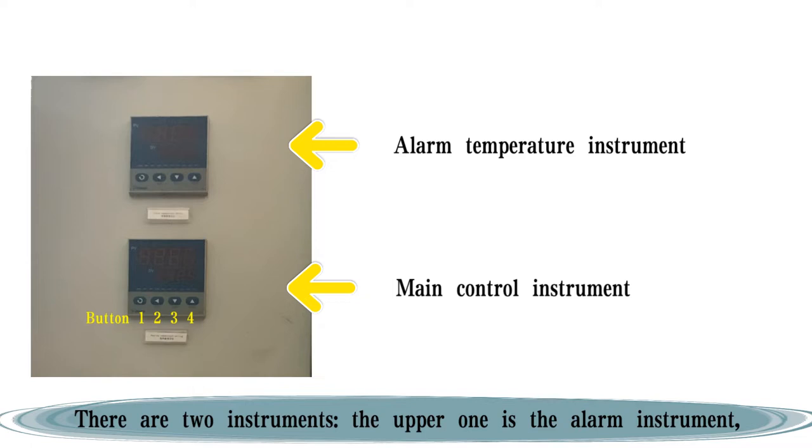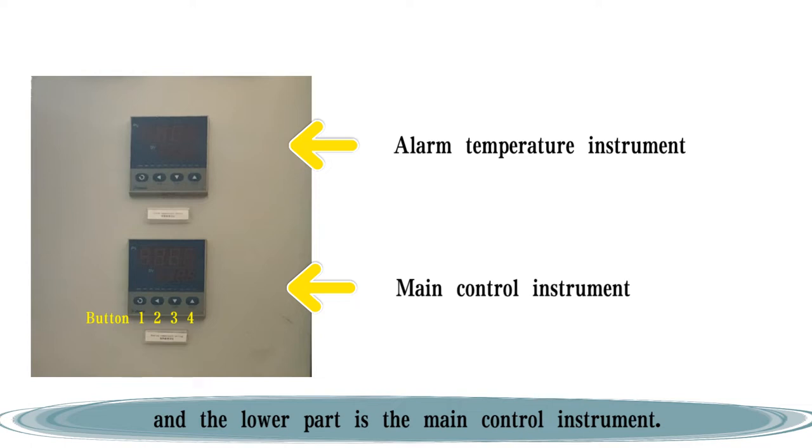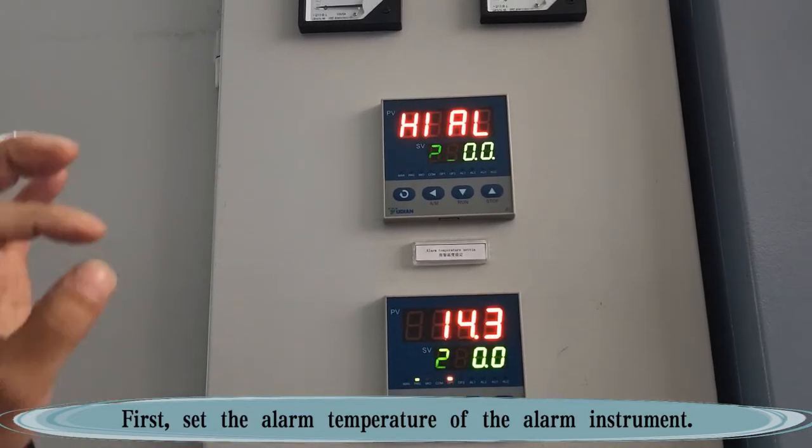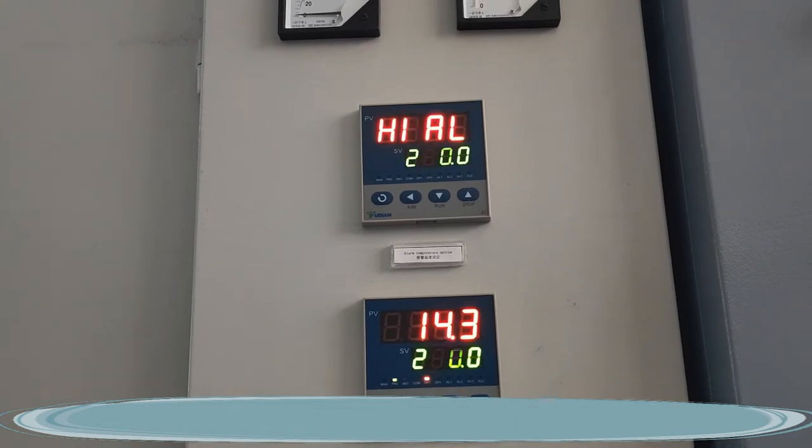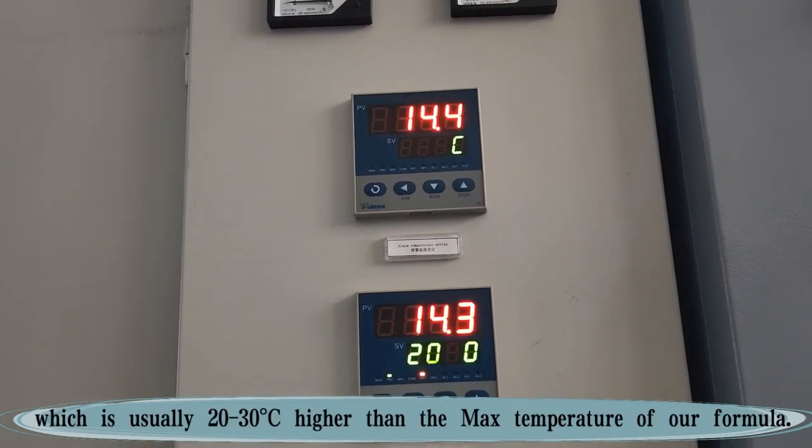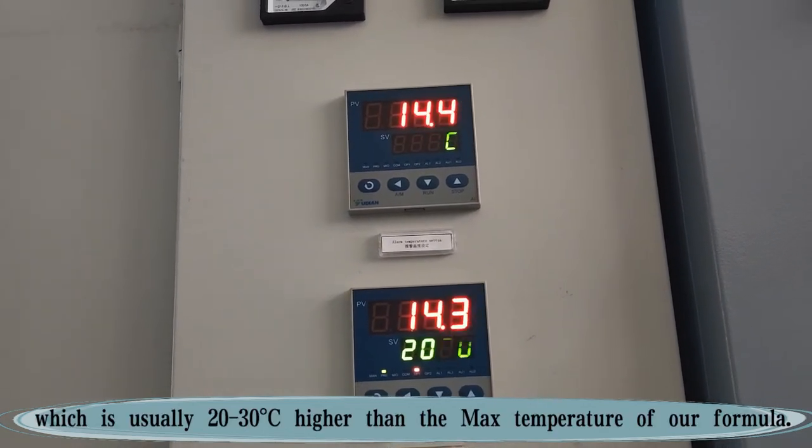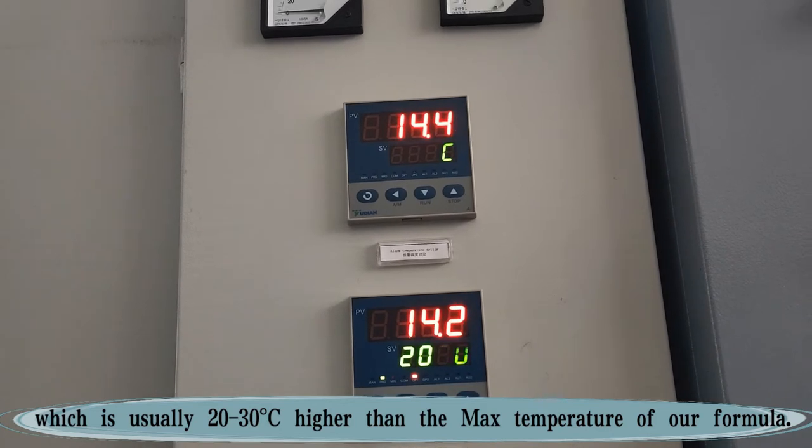The upper one is the alarm instrument and the lower part is the main control instrument. First, set the alarm temperature of the alarm instrument, which is usually 20 to 30 degrees Celsius higher than the max temperature of our formula.